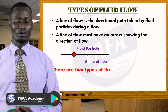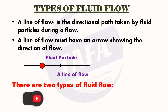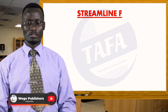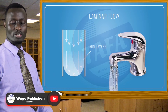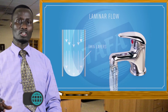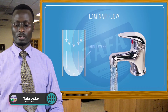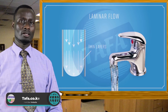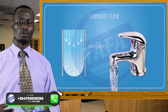There are two types of fluid flow. Number one, streamlined flow, and number two, turbulent flow. Let's start by looking at streamlined flow. We have a small amount of water flowing from a tap. When you open the tap gently and to a small extent, water flows out smoothly. That is called laminar flow or streamlined flow.